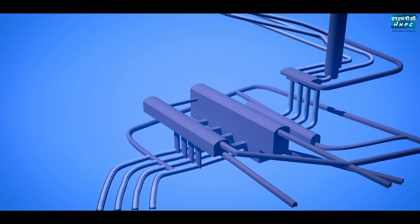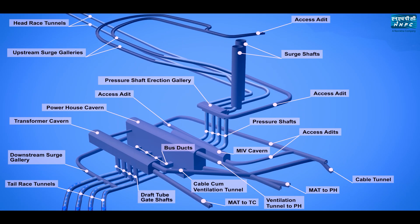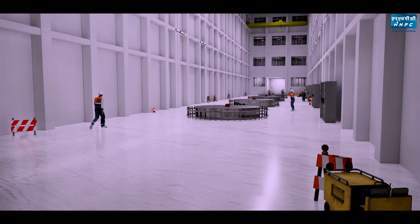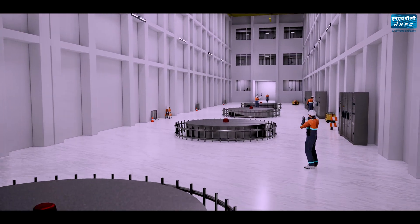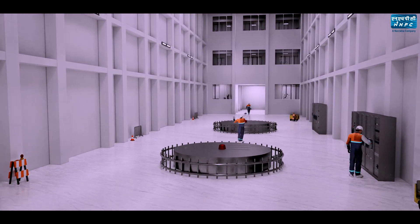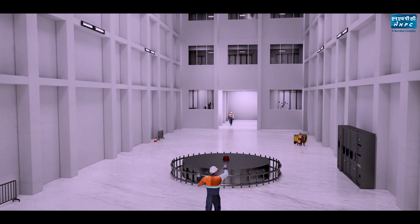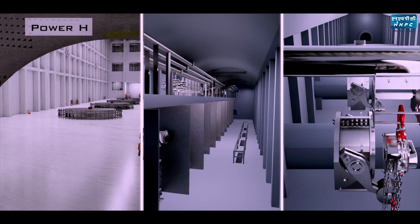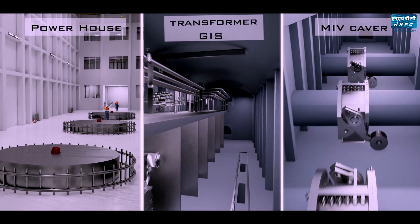The water then passes through the turbines, draft tubes, and then tail race tunnels which discharges the water back into the river. The underground powerhouse of Tista 6 project is located on the right bank of river Tista. The powerhouse houses four generating units of 125 megawatts each. The powerhouse complex comprises of three underground caverns: powerhouse cavern, transformer cum GIS cavern, and MIV cavern.